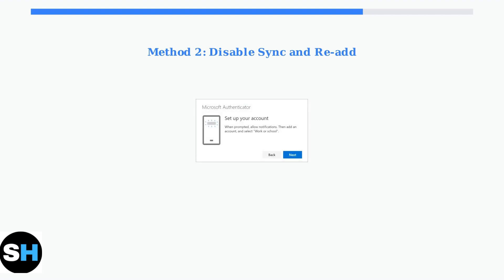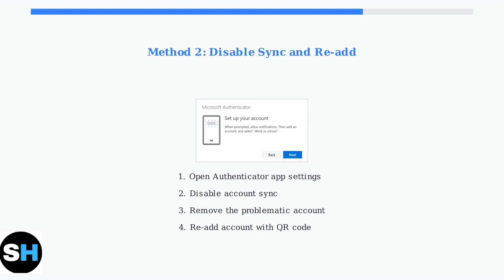Method two involves the sync settings. Go to your Authenticator app settings and disable account sync. Then remove the problematic account and re-add it using the QR code. This method ensures a clean reset of the account configuration.